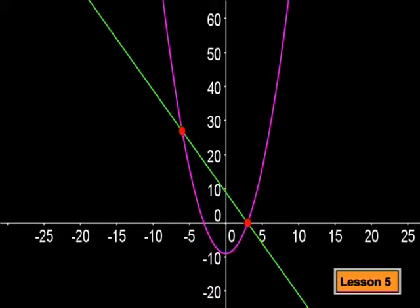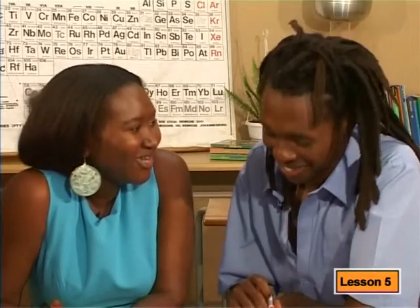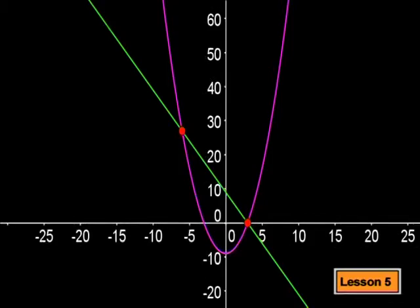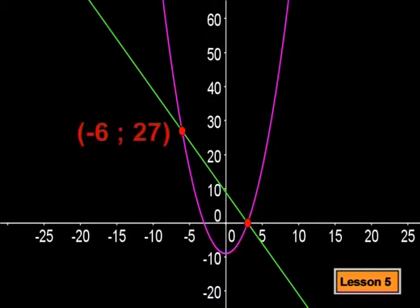Okay, I've plotted all the points. Now all I need to do is join the points to draw the graph. Very well done, Teboho. Can you read off the points of intersection? Yes. The graph intersects here at negative 6, 27, and here at 3, 0.